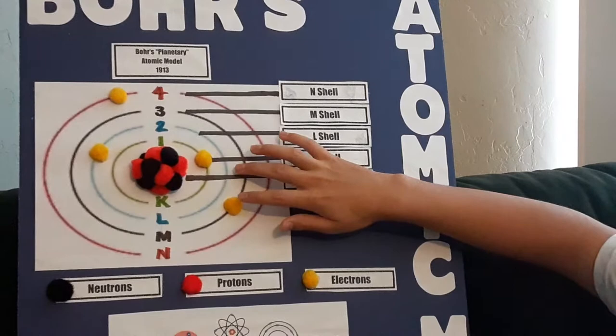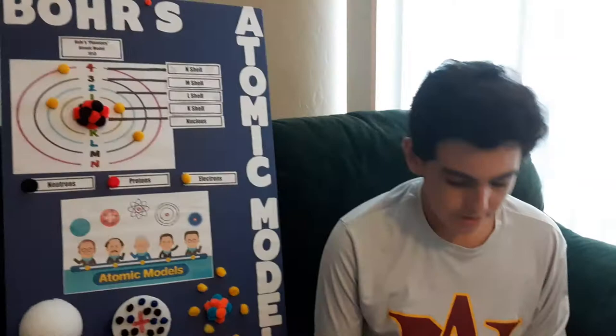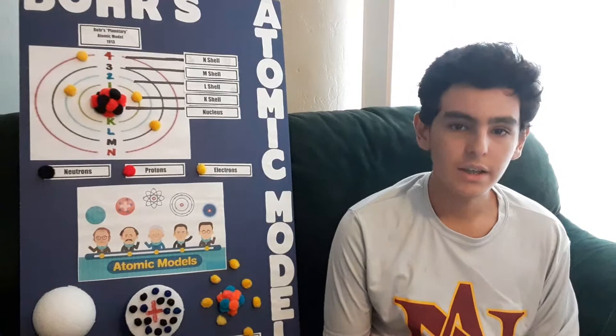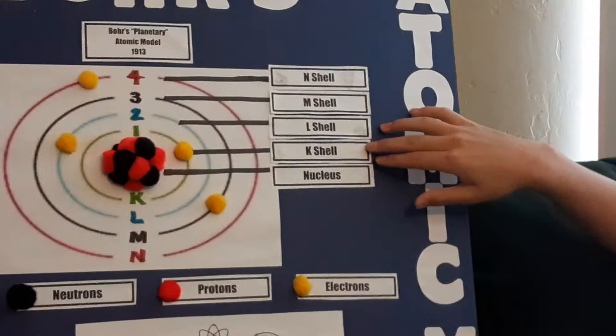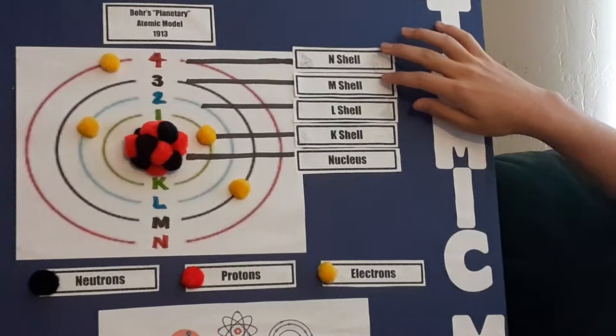Bohr thought that the atom was a nucleus surrounded by electrons that orbit in lines called energy shells, like the planetary system. These shells are also known as the K shell, L shell, M shell, and N shell. They are also known as the 1st, 2nd, 3rd, and 4th shell.